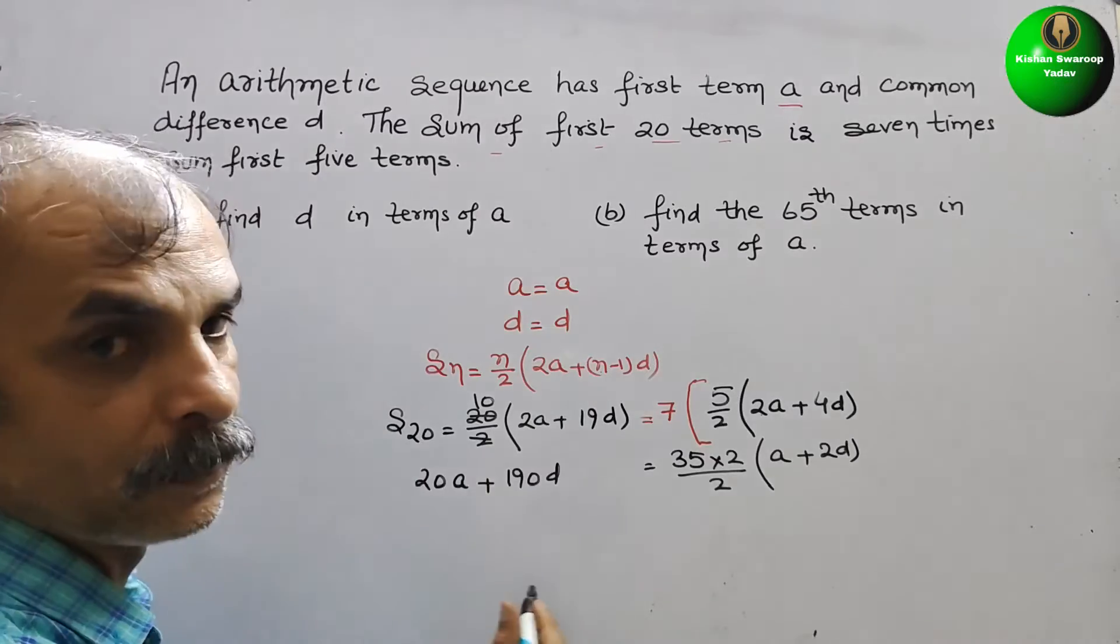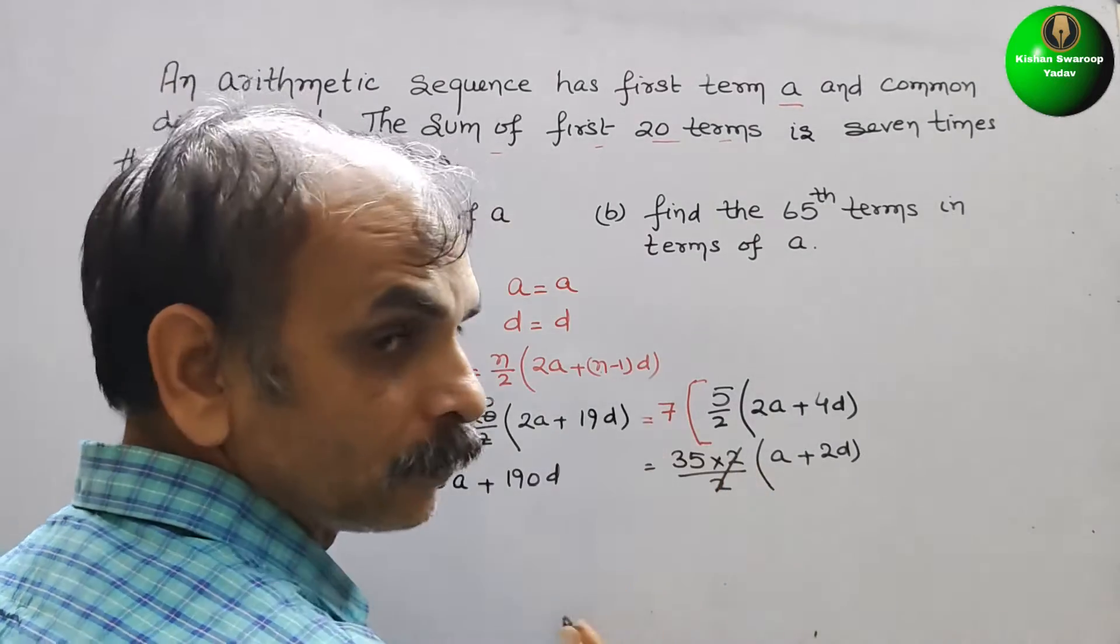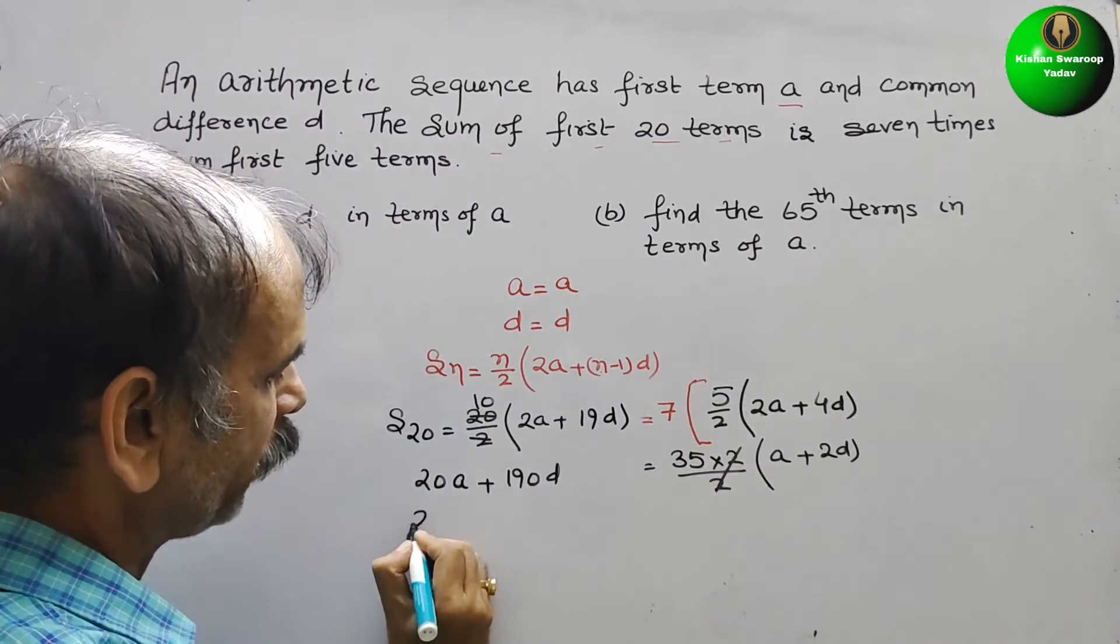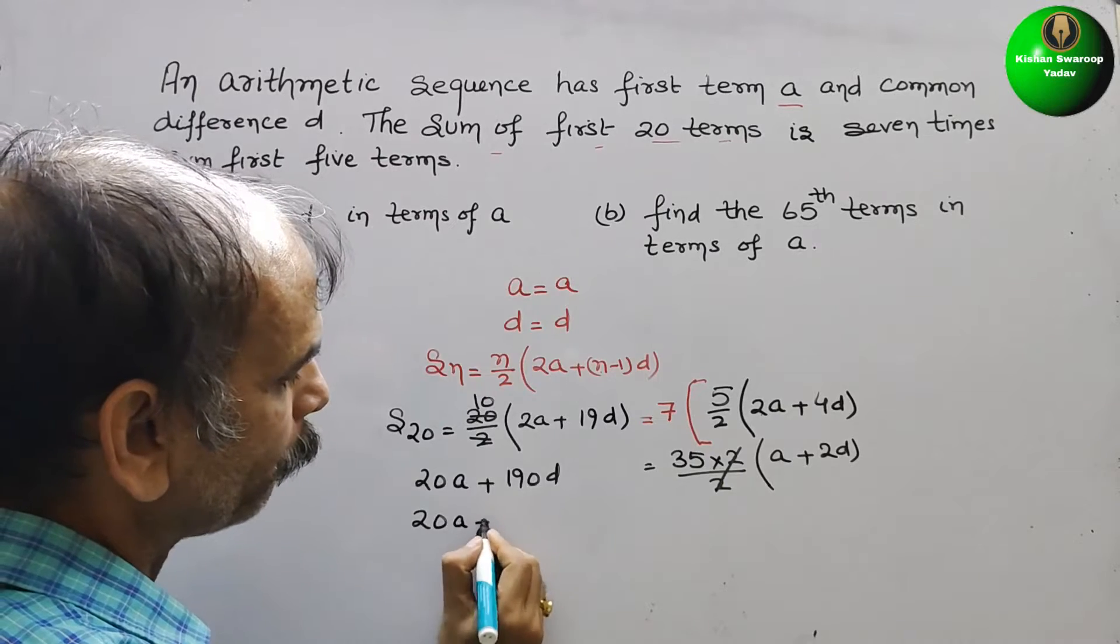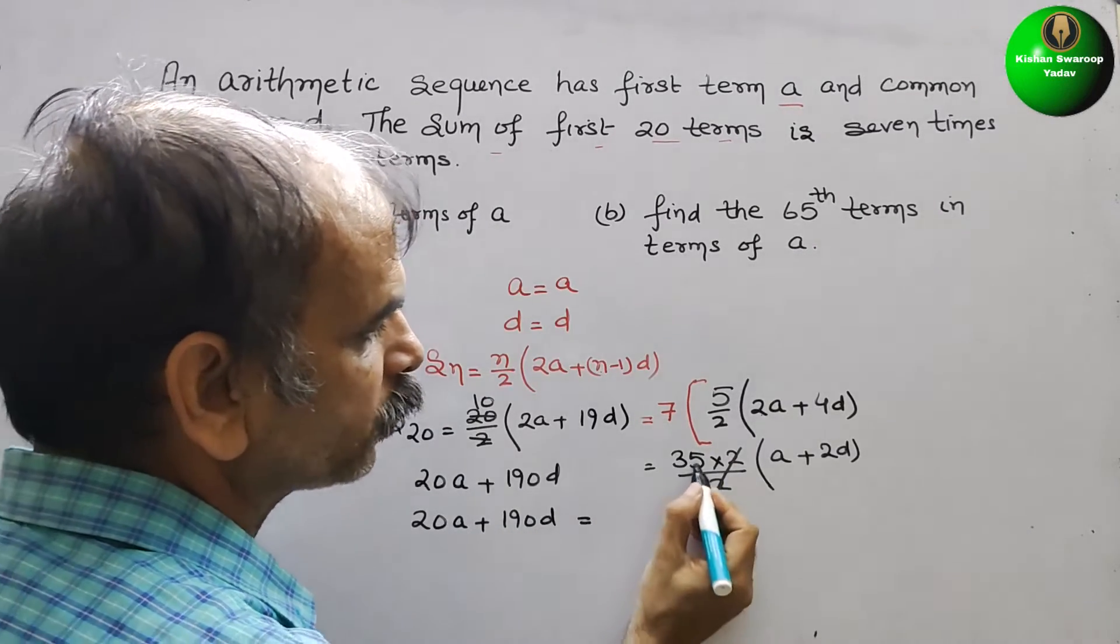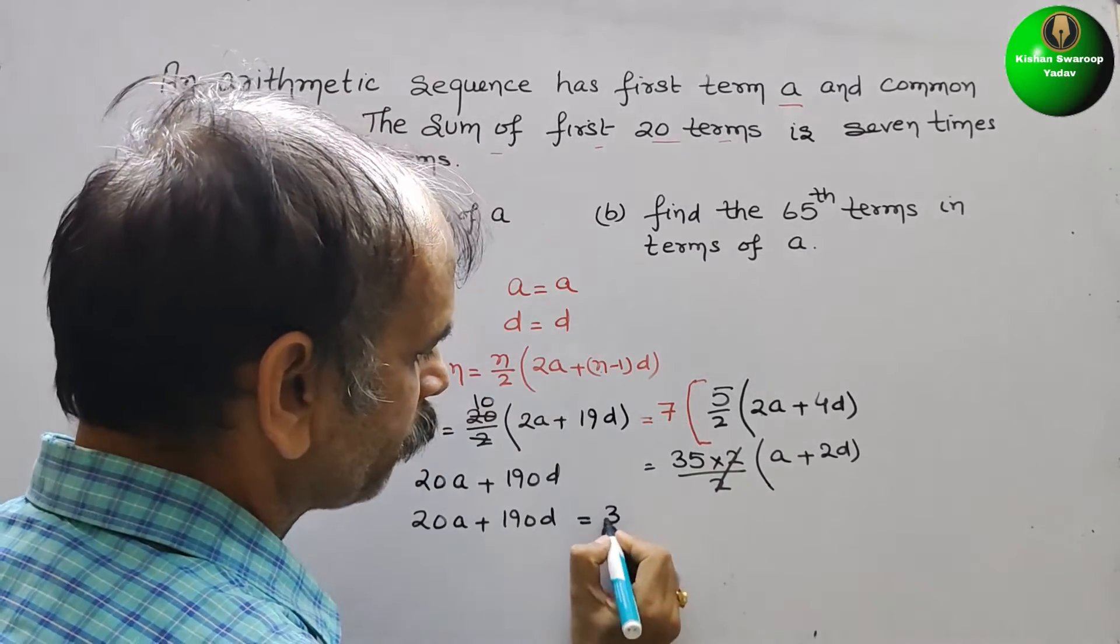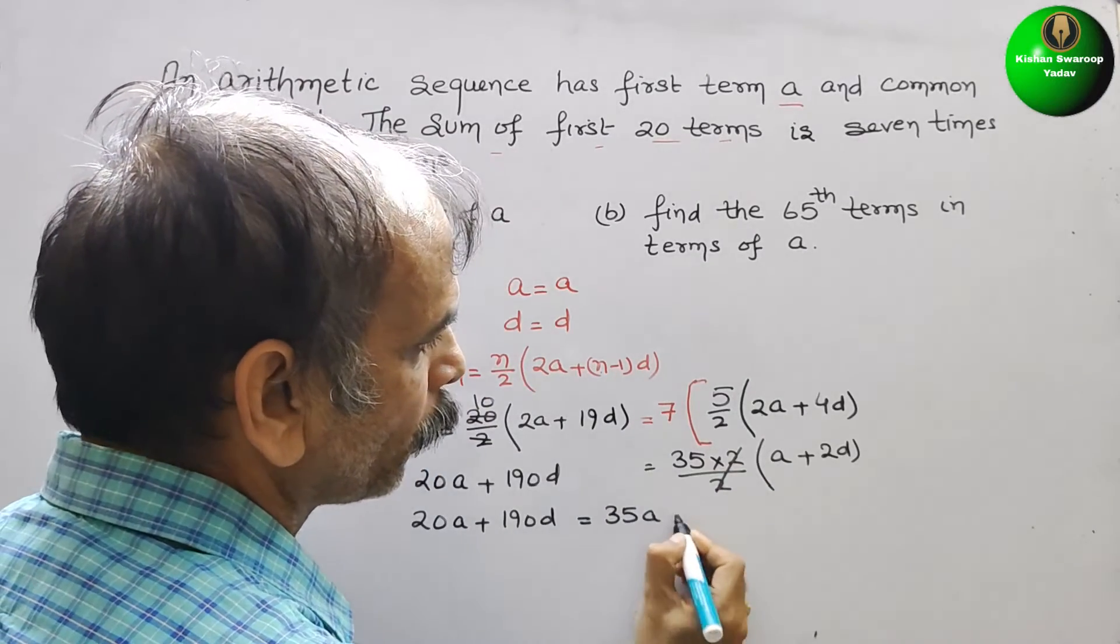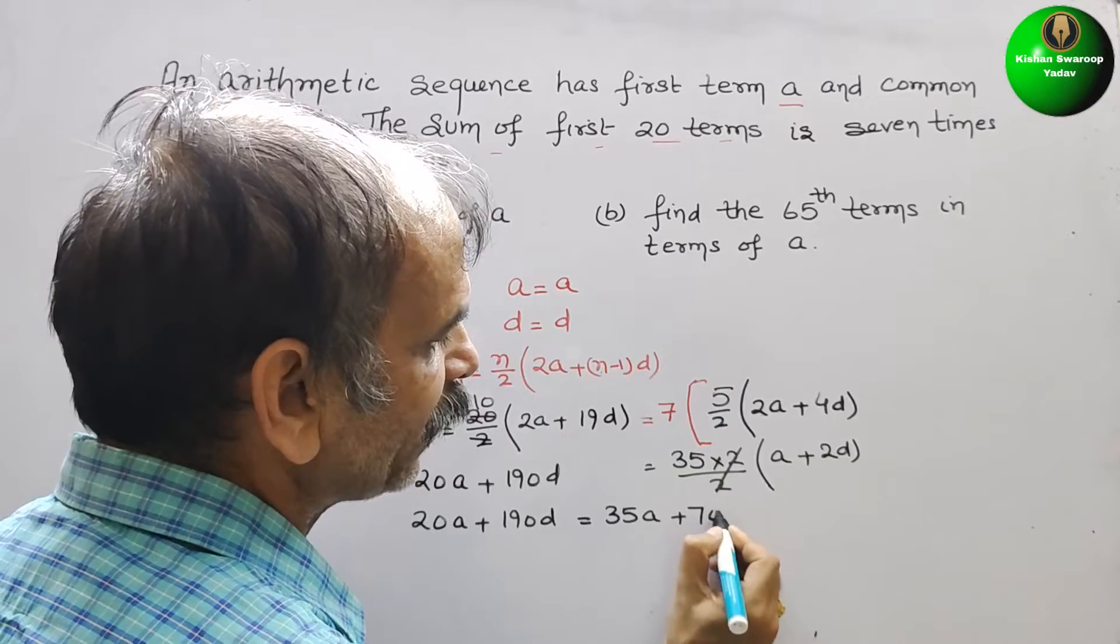This is equal to this. So 2 and 2 cancel. So now it will be 20A plus 190D equals 35A plus 70D.